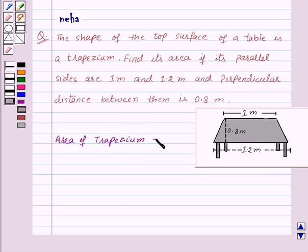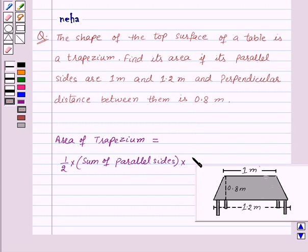Area of trapezium is 1 by 2 into sum of parallel sides into height. This is the key idea for this question.